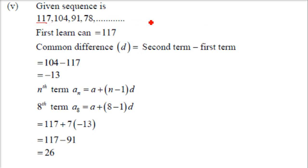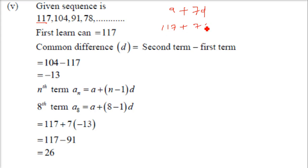Here we have A as 117 and we need to find the 8th term. So it will be A plus 7D, that is 8 minus 1 equals 7. A is 117 plus 7 into D. D is 104 minus 117, which is minus 13. Solving this gives 26 as the 8th term.